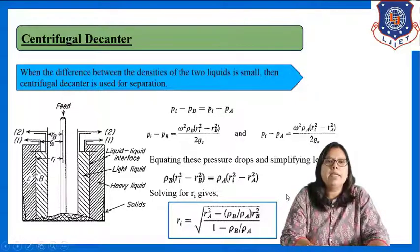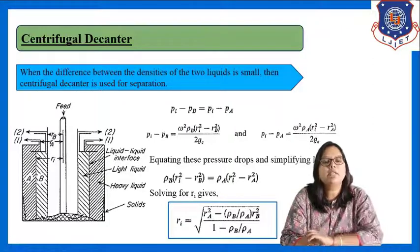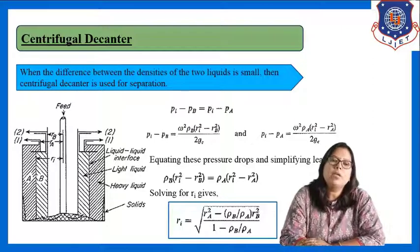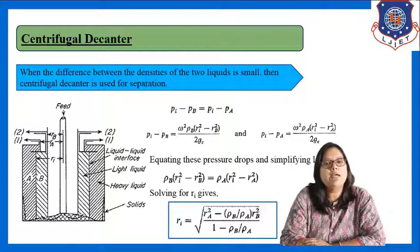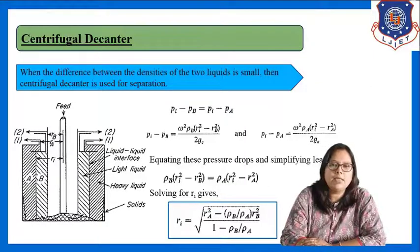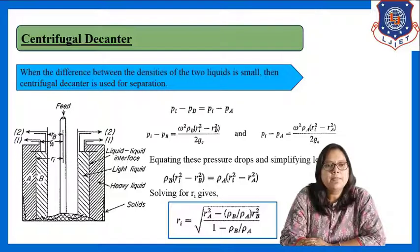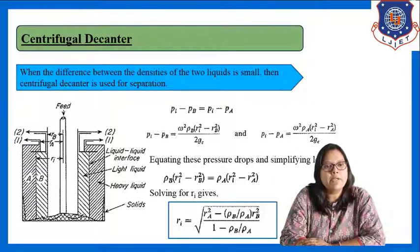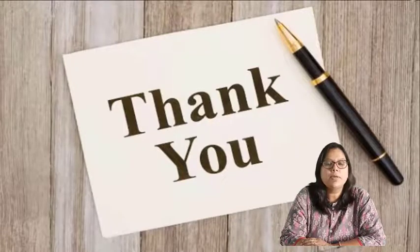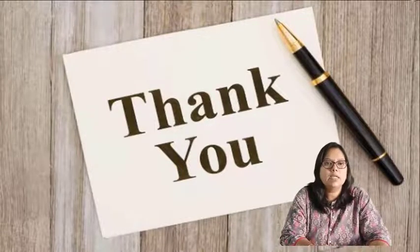So this is all about decanters. We have seen what is decantation, what is a decanter, and the types of decanters — gravity decanter and centrifugal decanter — and the application of both types. I am completing this lecture here. I hope this is clear to all. Thank you.